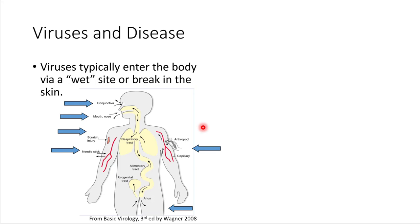The virus particles will just be on the surface of your hand. So what you want to do is be careful not to touch your face — your face has a lot of mucous membranes. Don't touch your nose, your eyes, or your mouth, because that's where viruses could gain entry into your body. If you're out and about touching a dirty doorknob, just be sure to wash your hands with soap and water, and that'll flush the virus particles away without ever actually infecting you.